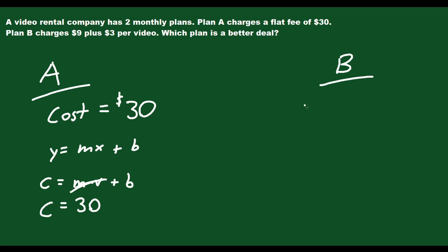Whereas over here in plan B, your cost is going to equal $9 plus another $3 for every video that you end up renting. So if you rent one video, it's $3 plus 9, so 12.